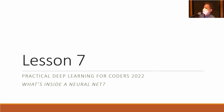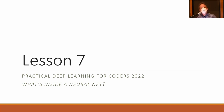Welcome to lesson seven, the penultimate lesson of Practical Deep Learning for Coders part one. Today we're going to be digging into what's inside a neural net. We've already seen what's inside the most basic possible neural net — a sandwich of fully connected layers, or linear layers, and ReLUs — and we built that from scratch. There are a lot of tweaks we can do, and most of them involve the very first or very last layer. That's where we'll focus, and over the next couple of weeks we'll also look at some tweaks we can do inside as well.